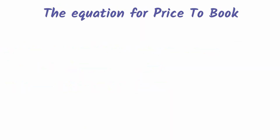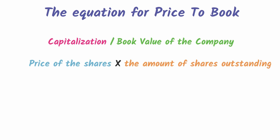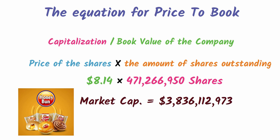Now for the PB section, which will carry the value a bit higher. The equation for price-to-book is market capitalization divided by book value. Market capitalization is simply share price multiplied by outstanding shares. Honey Bun's share price is $8.14, multiplied by 471,266,950 shares, giving a market cap of $3,836,112,973.